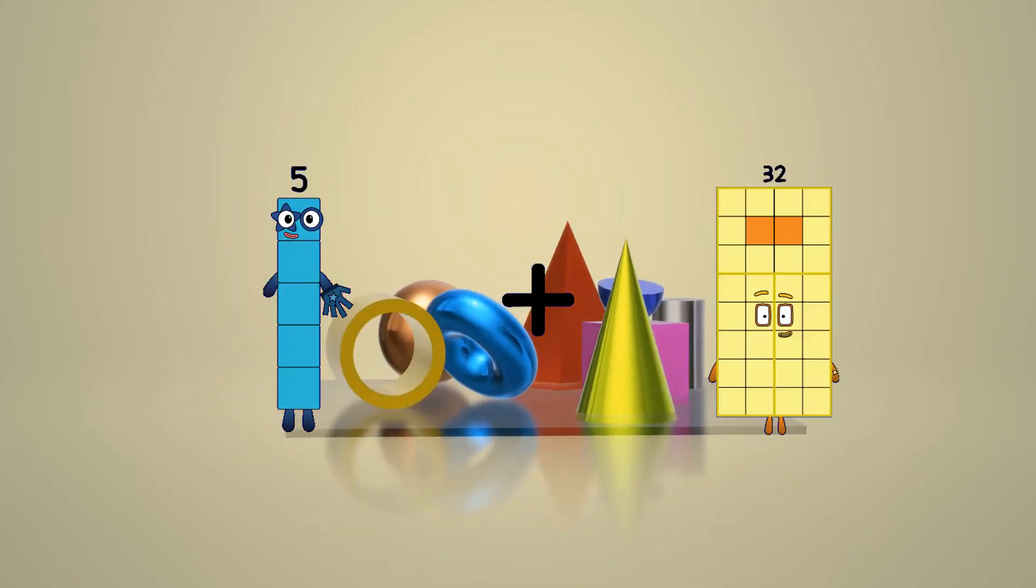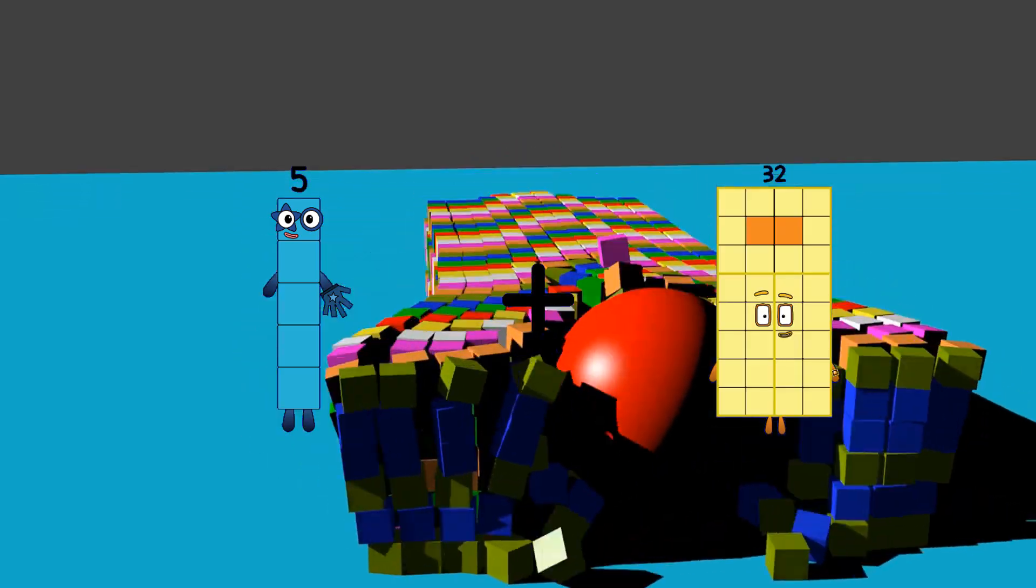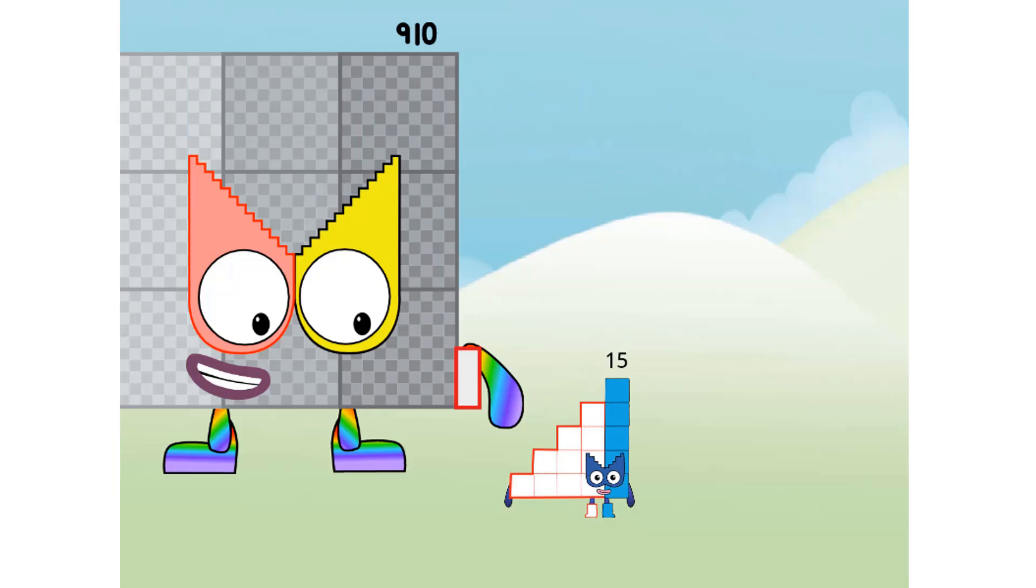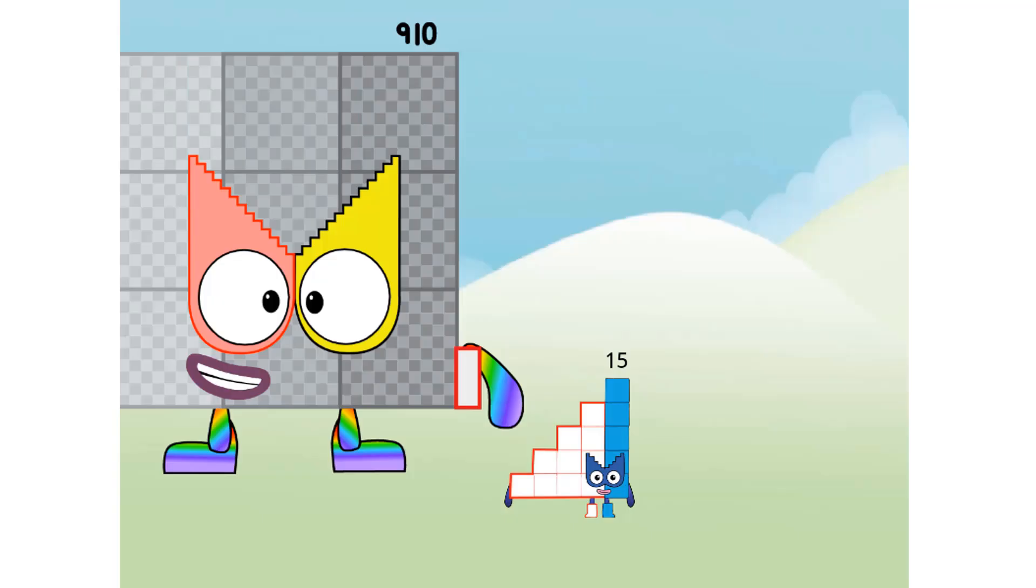5 plus 32 equals 37. Hello, I'm 15, and I'm a Step Squad member. Hello, 15. Greetings, 910. So, what does a Step Squad mean? It means that it's like a Step Squad. Oh, okay. Well, that's the end of this video. Make sure to credit 910. If you don't credit me, I will kill you.